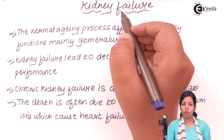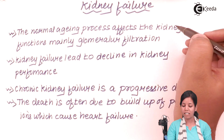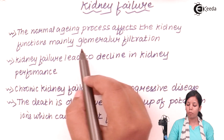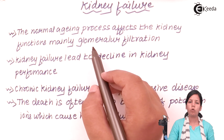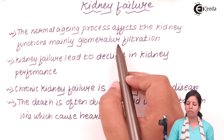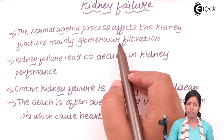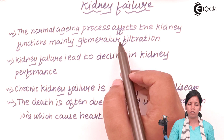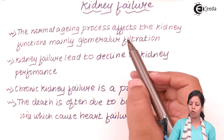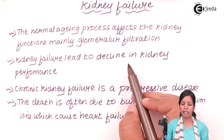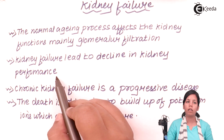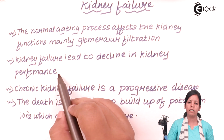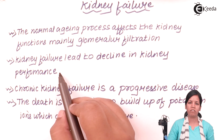Kidney failure. The normal aging process also affects kidney function through glomerular filtration. Once the kidney has failed or doesn't work properly, ultrafiltration or glomerular filtration would be badly affected. Kidney failure leads to a decline in kidney performance — the nephron cells, which are the basic unit of the kidney, would be affected.